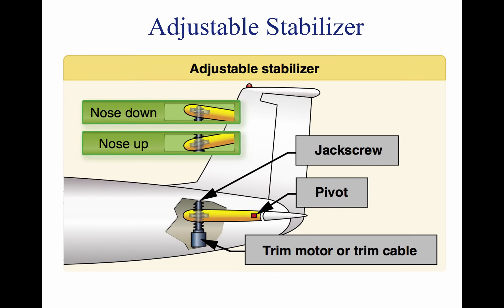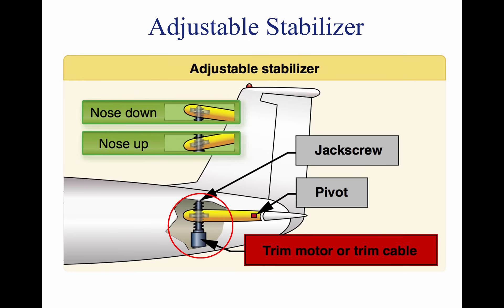Rather than using a movable tab on the trailing edge of the elevator, some aircraft have an adjustable stabilizer. This setup connects the stabilizer to a jack screw and is controlled by either a trim wheel or crank on smaller aircraft, and a motor on larger aircraft.